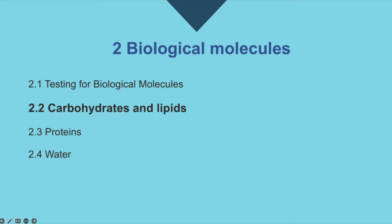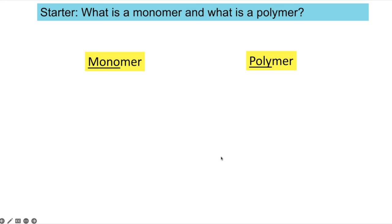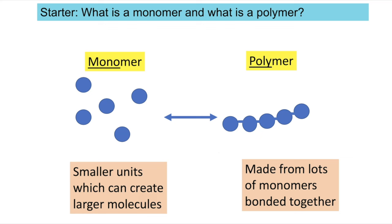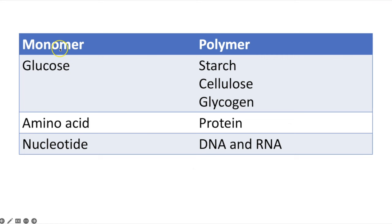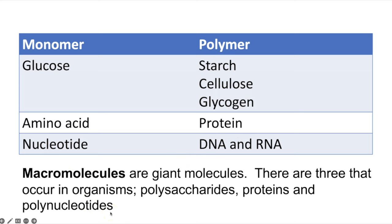Moving on to carbohydrates and lipids. Monomers are smaller units that bond together to create larger molecules; a polymer is made from many monomers bonded together. Macromolecules are giant molecules — the three you need to know are polysaccharides, proteins, and polynucleotides (which form DNA and RNA).